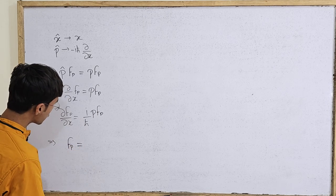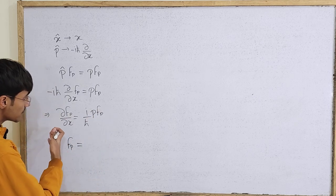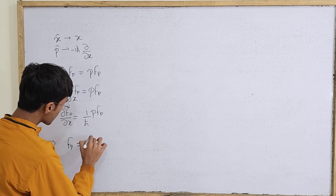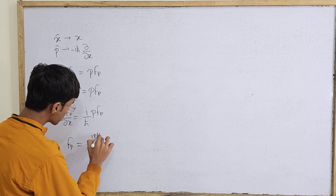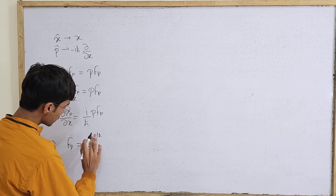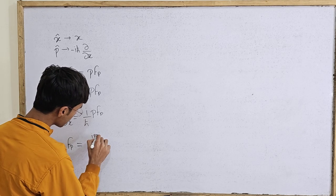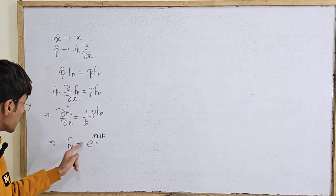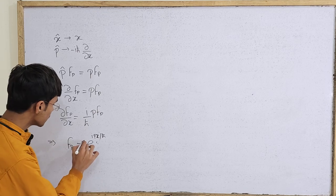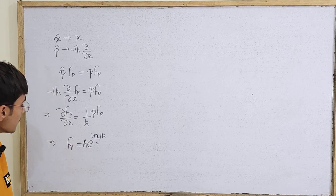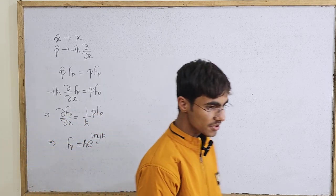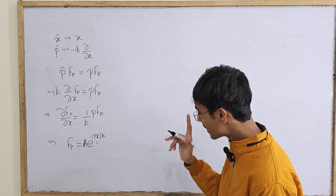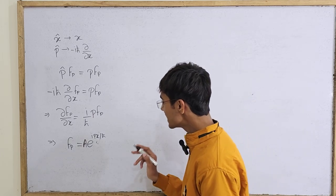This is a simple differential equation. Taking f_p to one side and dx to the other and integrating, we find that f_p is an exponential function: f_p equals A times e to the power iota p x over h-bar. You can put any constant A in front, so this is the general solution — the eigenfunction of the momentum operator.